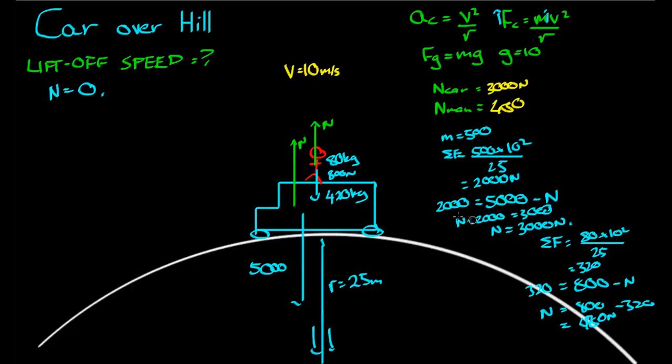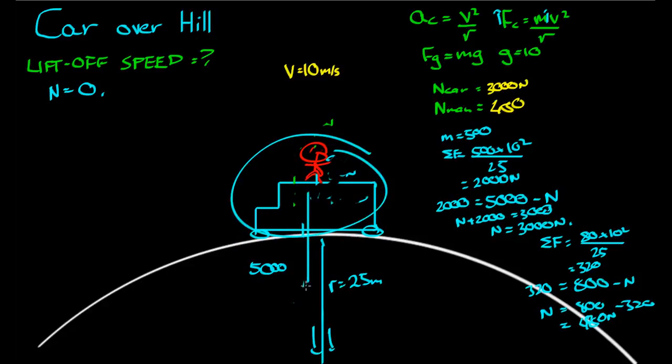If we redraw the force diagram, taking the man and the car as one object, we've got the gravity force acting down, which is equal to 5000 newtons. But we don't have the normal force. So there's only really one force acting on the car at this point, the gravity force. So the net force is equal to 5000 newtons straight down.